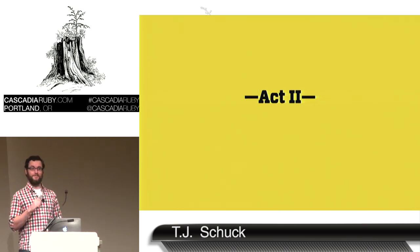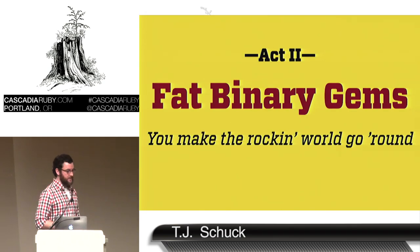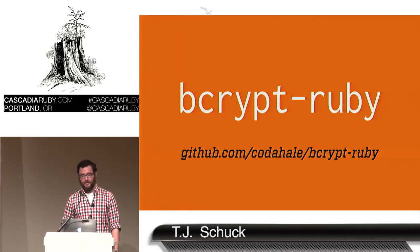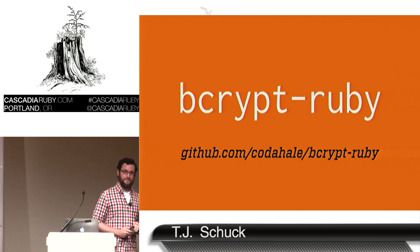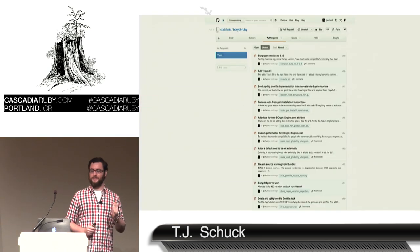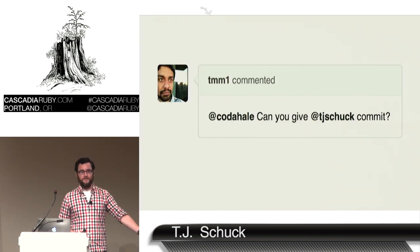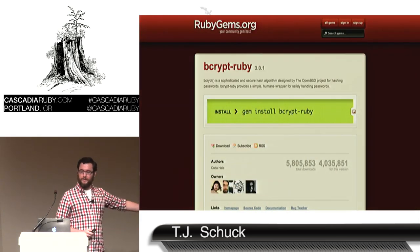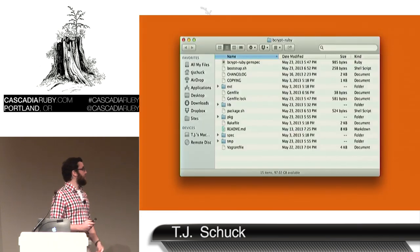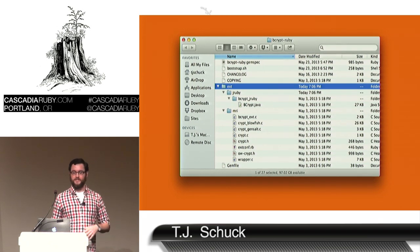So act one was the easy part — you can learn that on Wikipedia. Act two is where we add conflict. This is about fat binary gems. We talked about bcrypt Ruby — it's the Ruby gem for bcrypt. I wanted to add a feature to it, but the tests didn't run, the dependencies were out of date, and there were docs missing. That one pull request turned into a dozen pull requests. And after they were all merged, you can get commit bit by persistence — after enough annoyance, I asked for commit bit, and suddenly I was the maintainer of bcrypt Ruby. More accurately, bcrypt Ruby is a Ruby gem that's just a wrapper around C and Java extensions.